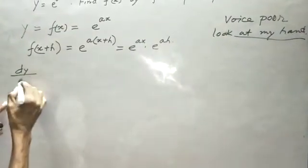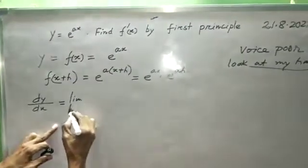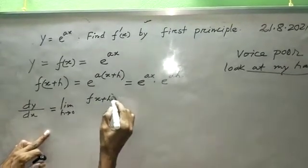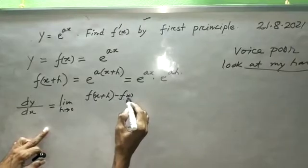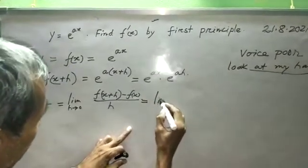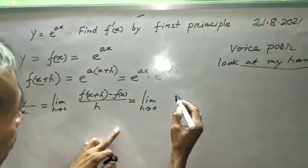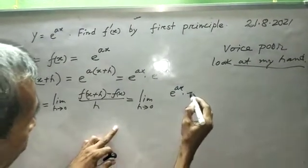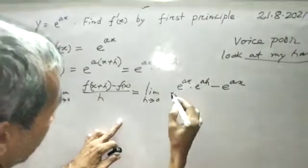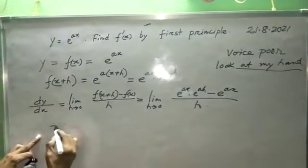dy by dx equal to limit h tends to 0 of f(x+h) minus f(x) by h, equal to limit h tends to 0 of e to the power ax into e to the power ah minus e to the power ax, all by h.